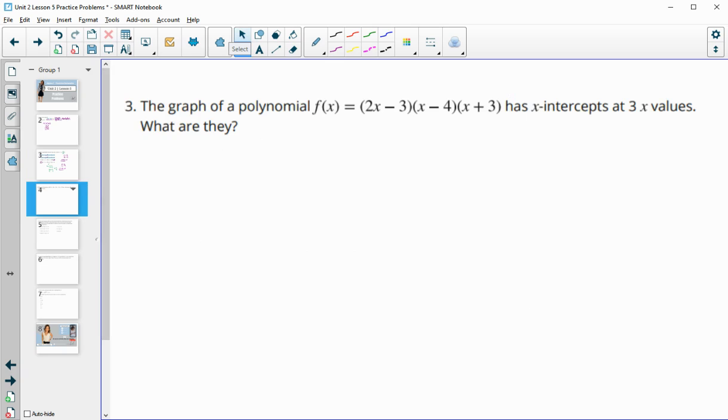Number 3, the graph of this polynomial has 3 x-intercepts. What are they? So remember that x-intercepts are on the x-axis here. So they're on the x-axis. And on the x-axis, we know that the y value or the function, f of x, is equal to 0.